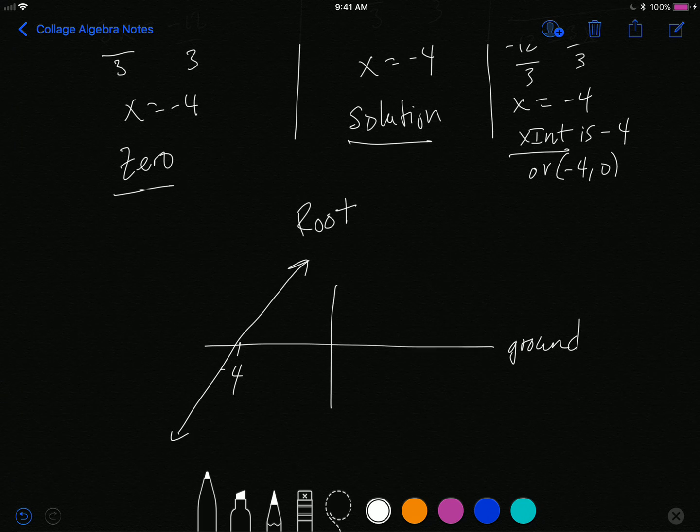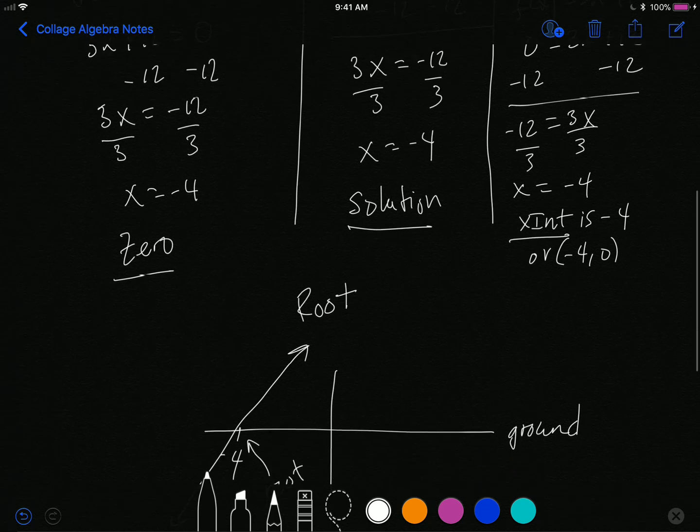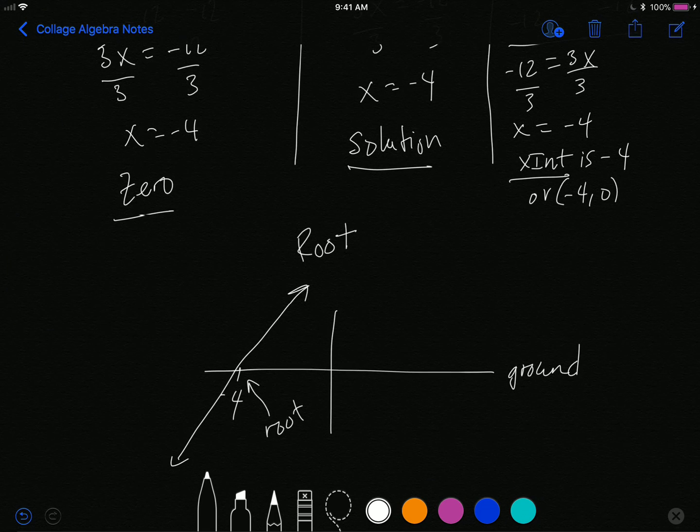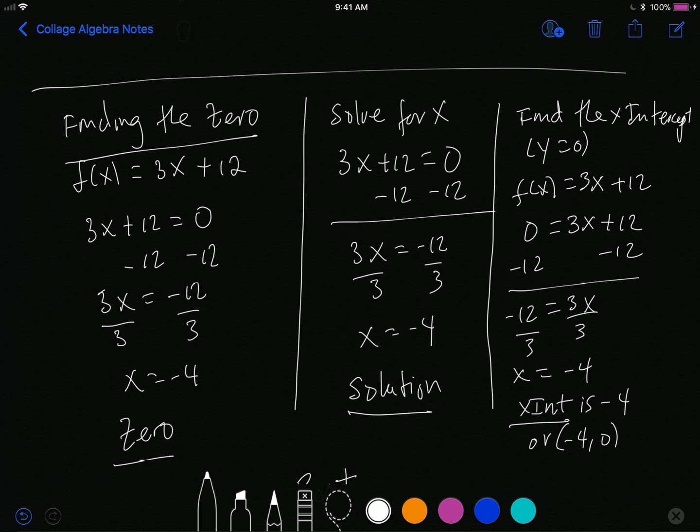This right here is your root because that's where the graph is breaking through the ground. Thing is that you just need to understand all three of these things: the zero, the solution, the x-intercept right here is the same thing. That's the nice thing, whenever you're finding a zero you already know what to do because you've already been able to find the x-intercept.